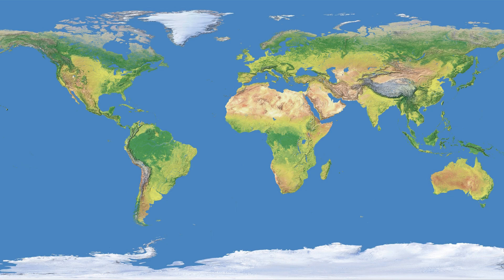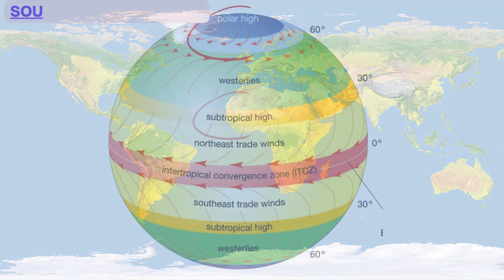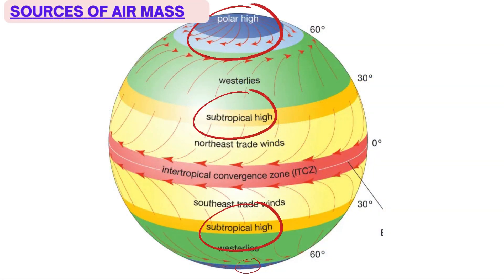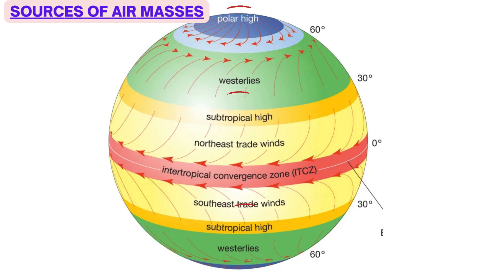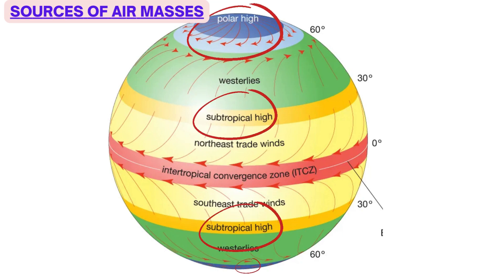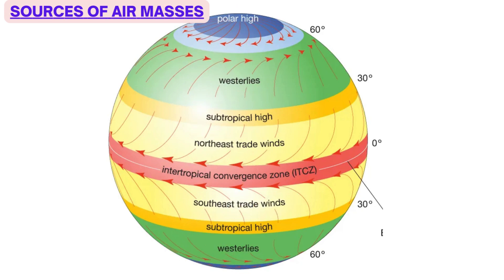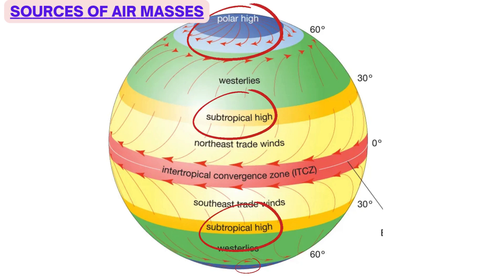This kind of stability or stagnation can only happen where there is a high pressure area. High pressure belts are stable and more or less stagnant. Looking at the pressure pattern of the entire planet, there are two high pressure belts: one is the subtropical high at approximately 23.5 degrees north and south, and the second is over the poles, called the polar high. These are the source areas of air masses.